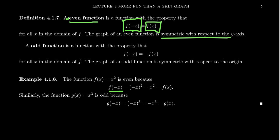Notice if you take f of negative x, this is going to be negative x quantity squared, which means negative x times negative x. You get a double negative, which becomes a positive, and you get back f of x. So putting that negative inside the function doesn't change anything — it's symmetric with respect to the y-axis.